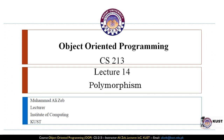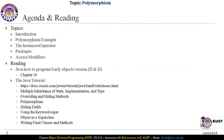Welcome to lecture 14 of the course CS213 Object Oriented Programming at Kohat University of Science and Technology. In this lecture we will continue our discussion of polymorphism and continue with the example from lecture 13, looking at some more relevant concepts. The book we are following is Java How to Program, Early Objects version, along with some tutorials linked on this slide.